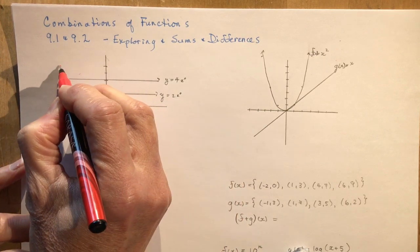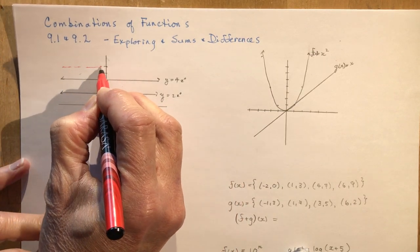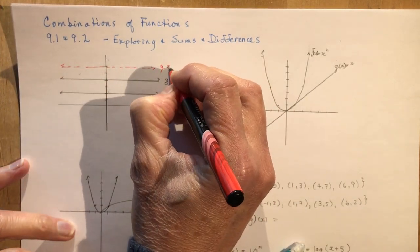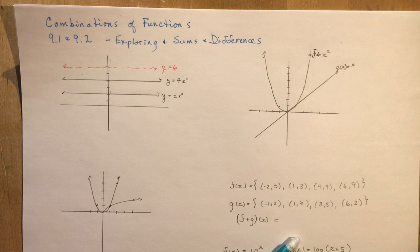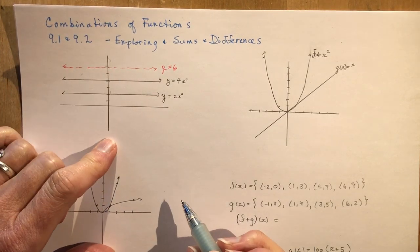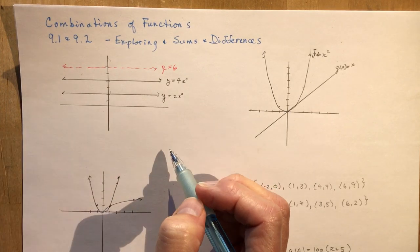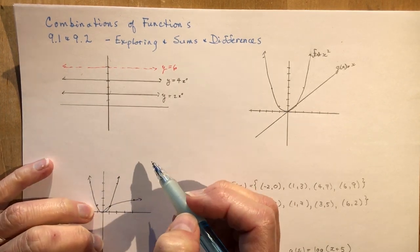So if I add 2 and 4 together, I would end up with this line up here at y equals 6. If I multiplied them together I'd have y equals 8. I could subtract them, get y equals 2. That's pretty much all you're doing on the most basic level.